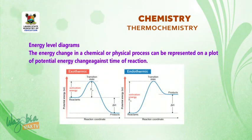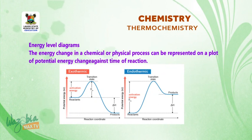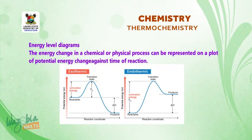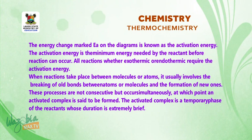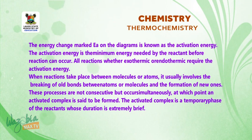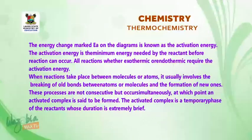Energy level diagram. The energy change in a chemical or physical process can be represented on a plot of potential energy change against the time of reaction. The energy change marked EA on the diagram is known as activation energy. The activation energy is the minimum energy needed by the reactant before the reaction can occur. All reactions, whether exothermic or endothermic, require activation energy.